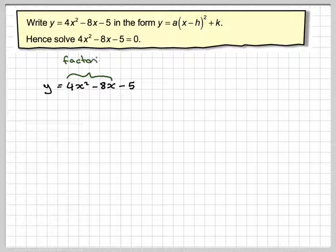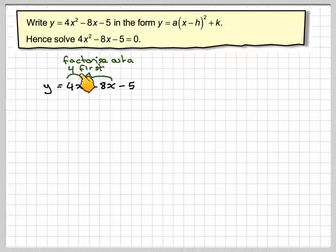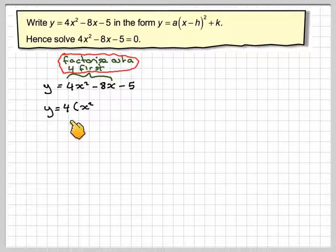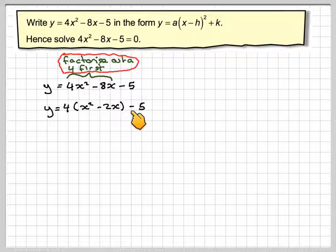So one approach is to factorize out the 4 first from here. And when you do that, you're going to get y equals 4 times (x squared minus 2x) minus 5.